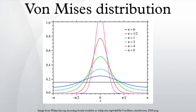If κ is 0, the distribution is uniform, and for small κ, it is close to uniform. If κ is large, the distribution becomes very concentrated about the angle μ with κ being a measure of the concentration. In fact, as κ increases, the distribution approaches a normal distribution in x with mean μ and variance 1/κ.